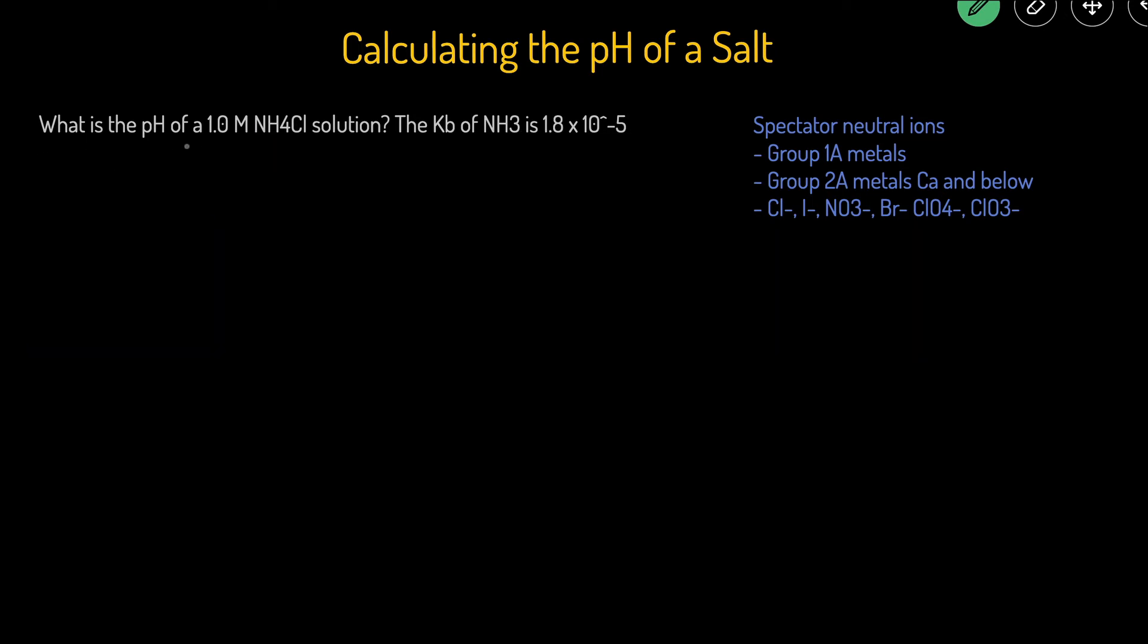This question reads, what is the pH of 1.0 molar ammonium chloride solution? We're also given that the KB of ammonia is 1.8 times 10 to the negative 5.